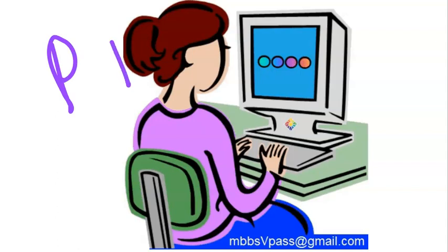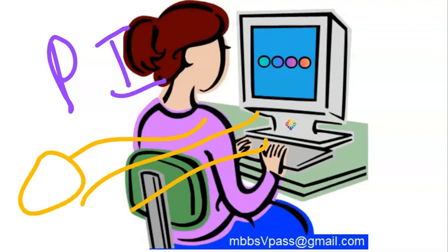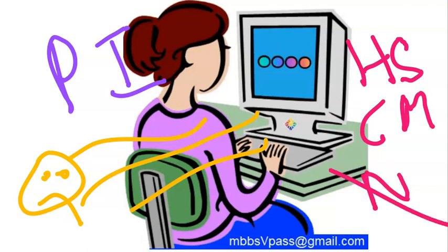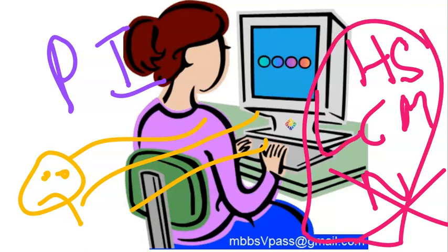In paralytic ileus, the nerves are present but not working. This is different from Hirschsprung's disease — congenital aganglionic megacolon — where the nerves themselves are absent in a particular section. Hirschsprung's mostly affects the large intestine, whereas paralytic ileus involves the ileum or small intestine.